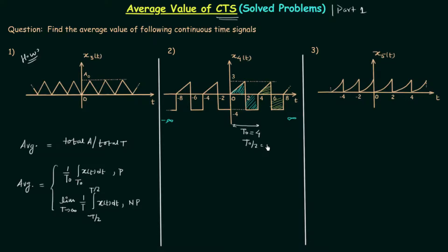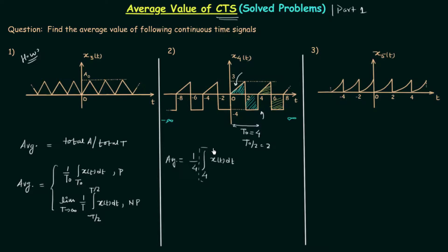So T0/2 will be equal to 2. Let's use the formula for the average: it is equal to 1/T0, and since T0 equals 4, it is 1/4, times the integral over the fundamental period T0 of the signal with respect to time. In one fundamental time period, this signal consists of a triangular part and a rectangular part, so there is no need to perform integration. We already know how to calculate the area of a triangle and the area of a rectangle, so we will calculate each and add them.